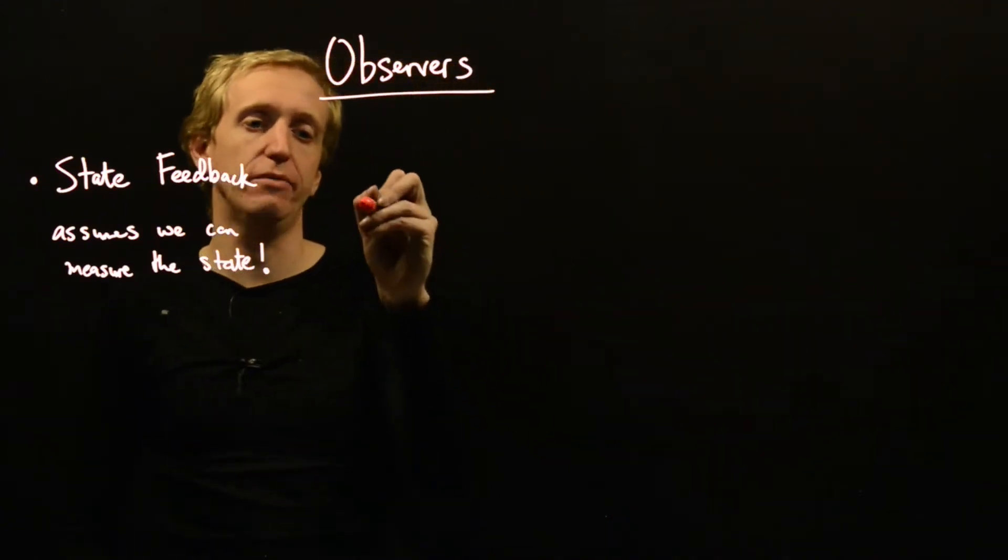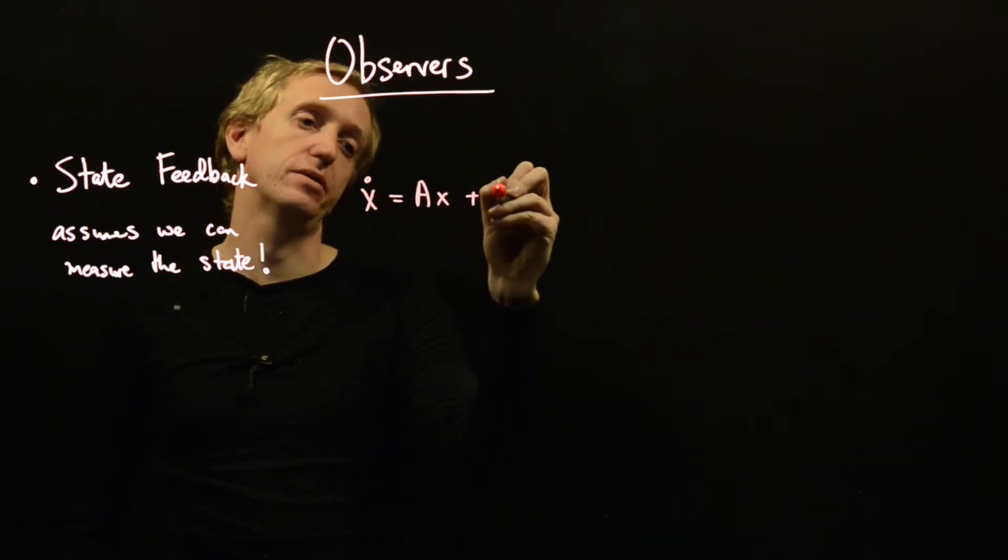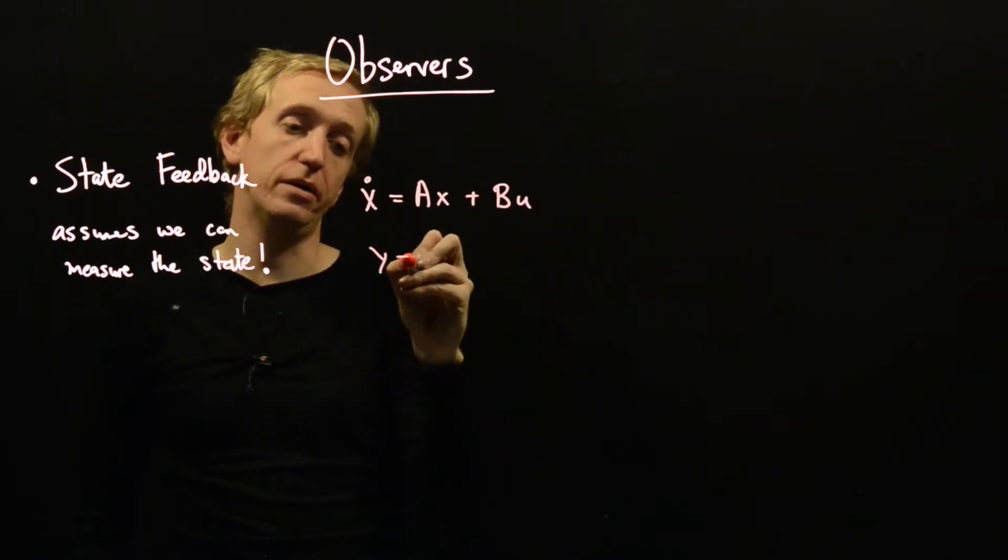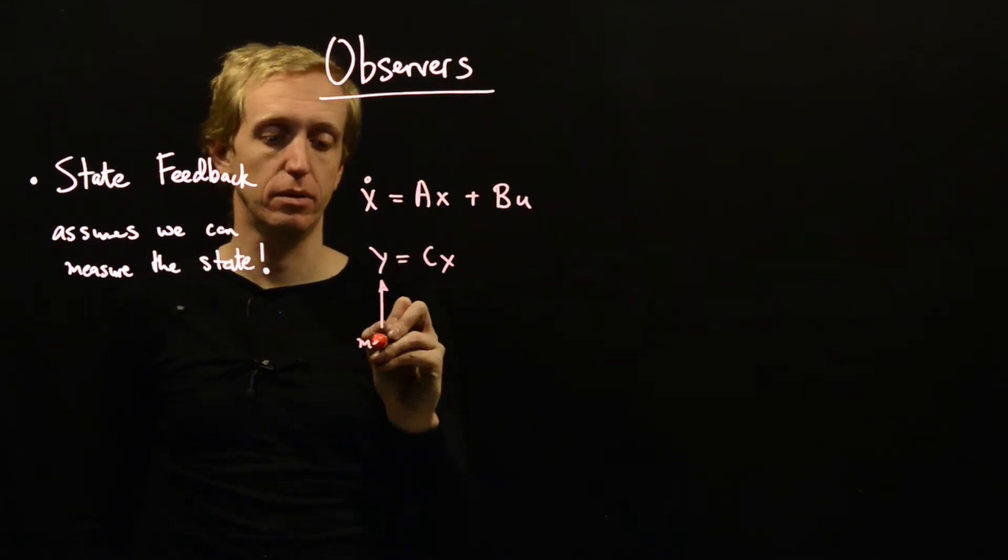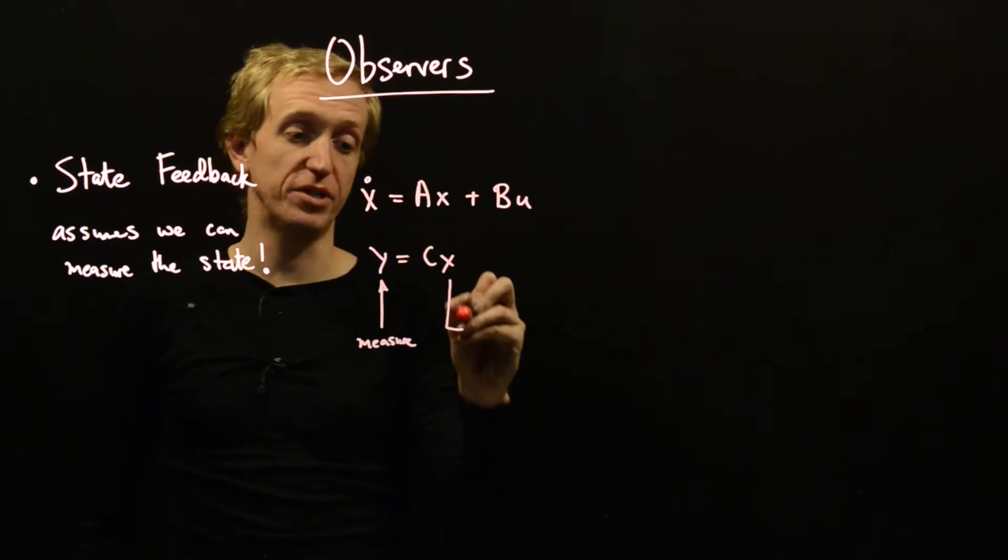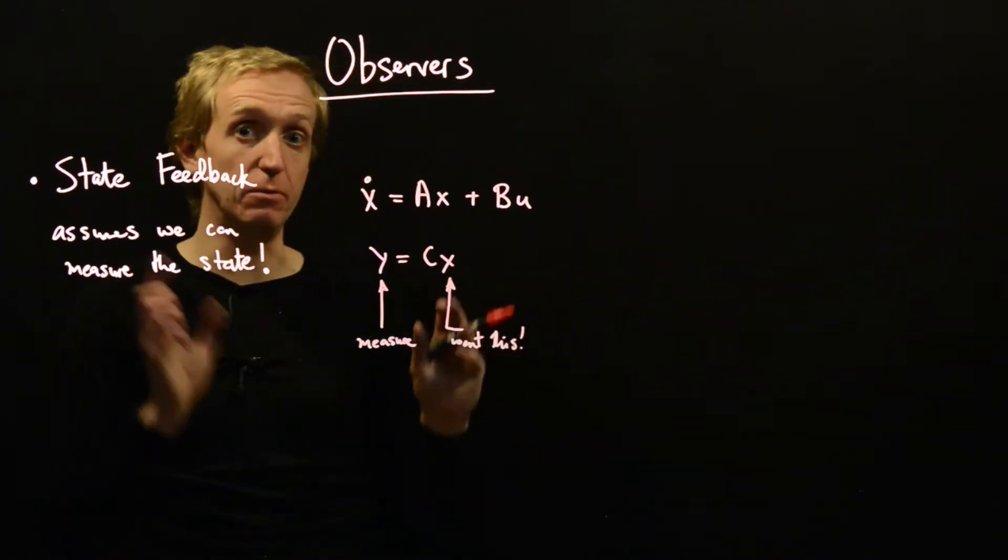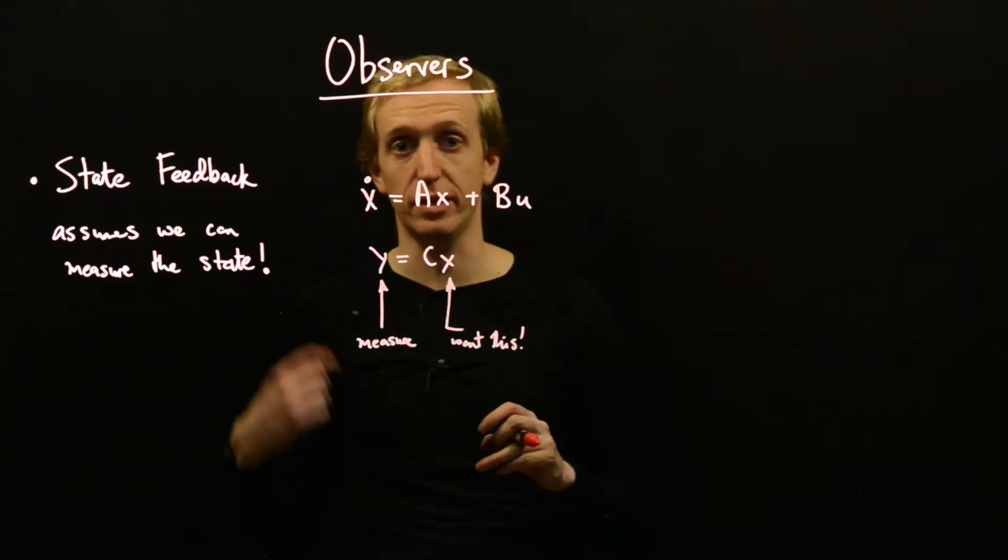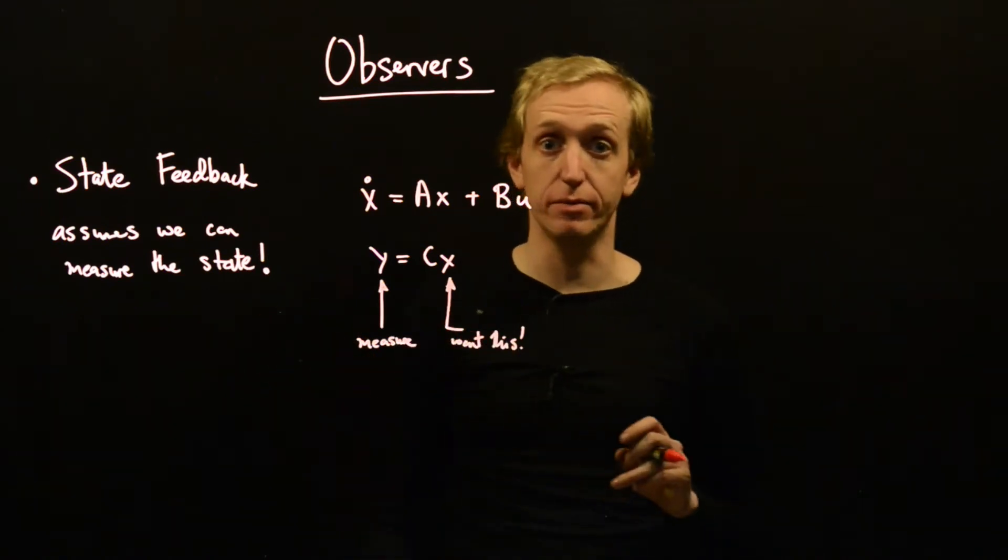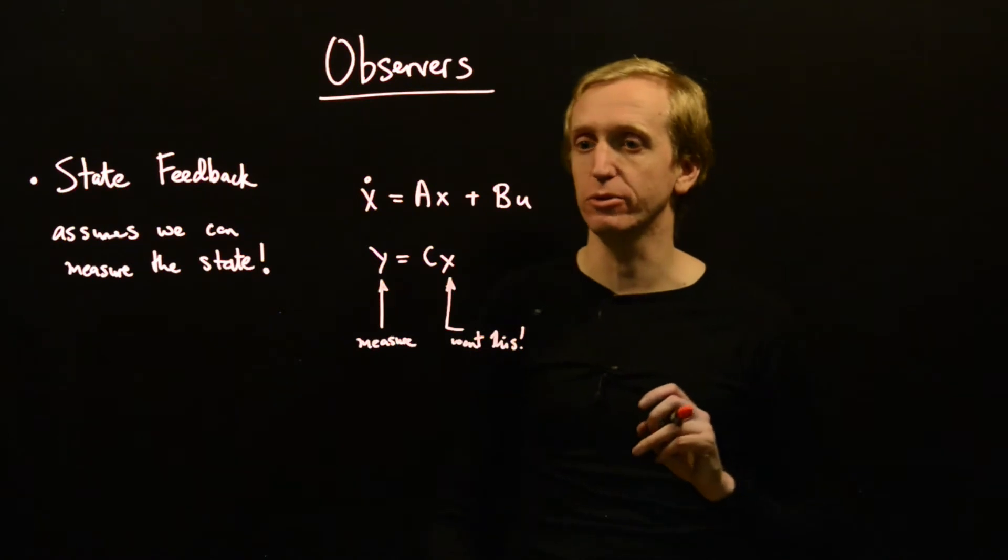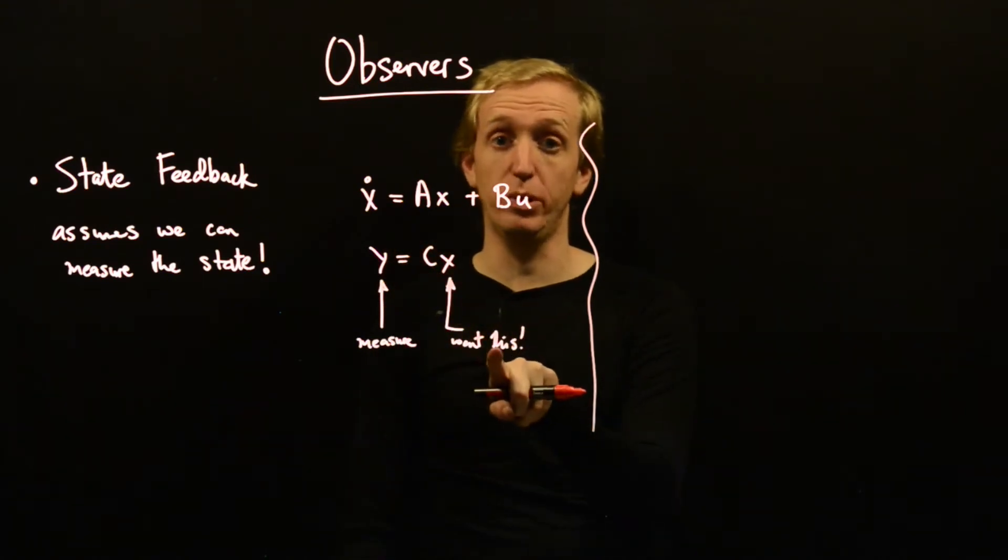So what's going on? We have some state space model: x dot equals Ax plus Bu, y equals Cx. We can measure this, so we can measure y, and we want to estimate this. We want this because then we can apply state feedback and place our closed loop poles so they're nice and stable. Here we have our state space model. This is what we can measure, this is what we want to do.